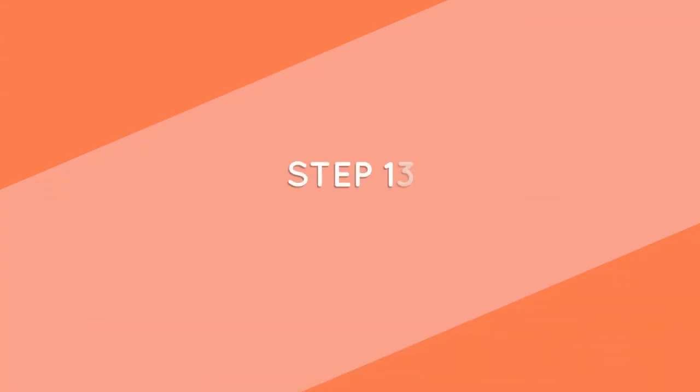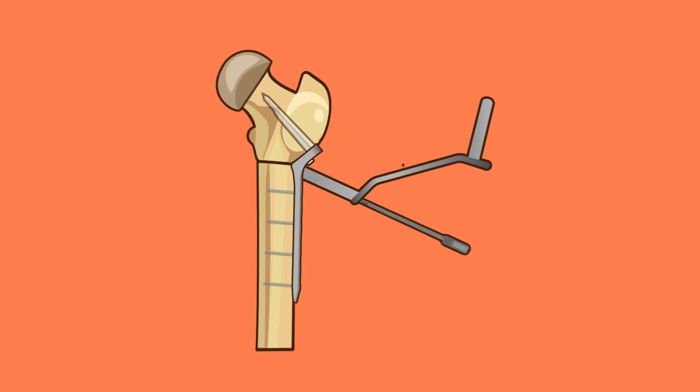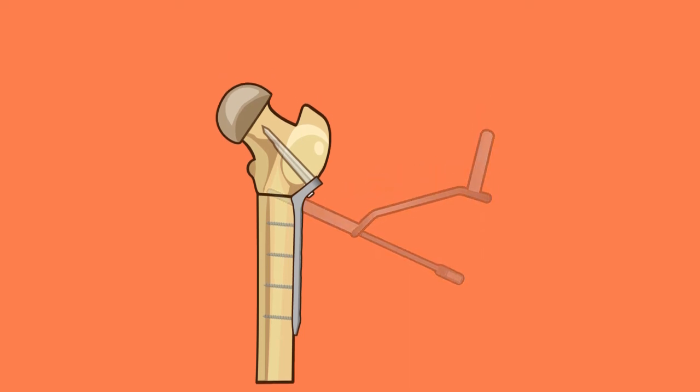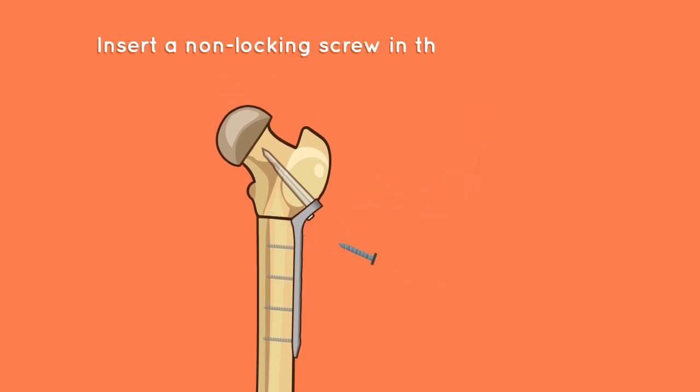Step 13: oblique screw insertion. An oblique screw can be inserted in order to cross the osteotomy and fix the two segments together. The compression screw should reach the proximal bone segment but avoid contact with the blade. Hold the polyaxial sleeve of the drill guide inside the first screw hole of the plate. Drill at the desired angle through both cortices. Note the depth of drilling to select the proper screw length. Insert a non-locking screw in the prepared hole.